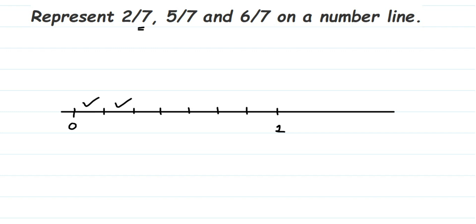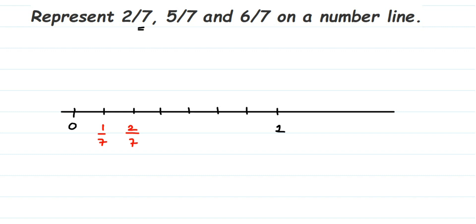The first point after 0 will be 1/7. You can write 0 instead of 0/7 at the start. So going along: 0, then 1/7, 2/7, 3/7, 4/7, 5/7, 6/7, and the last point is 7/7, which equals 1 — 7 and 7 cancel out to give 1.